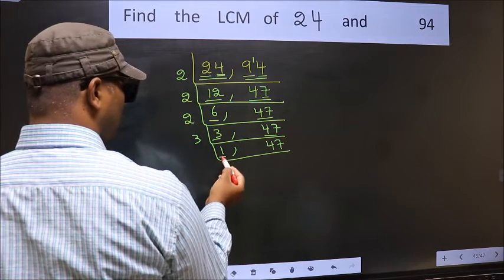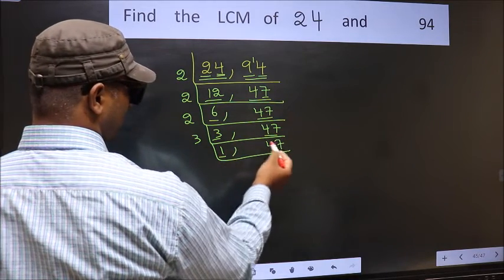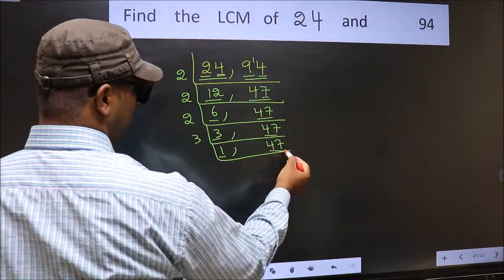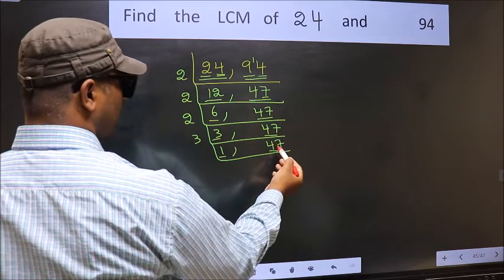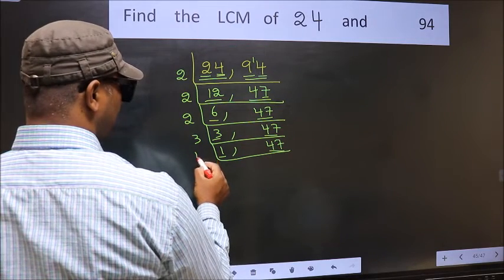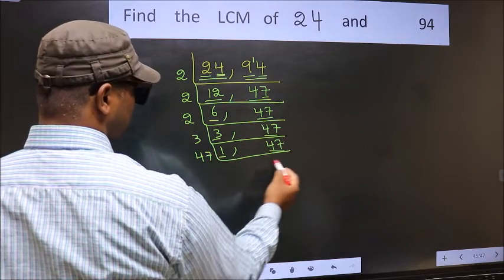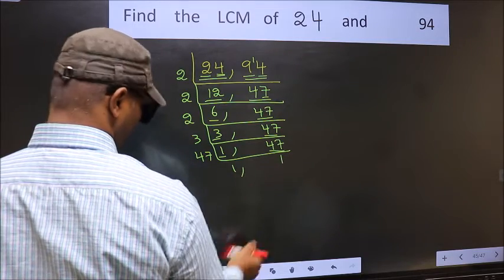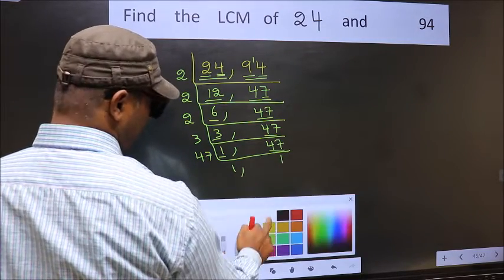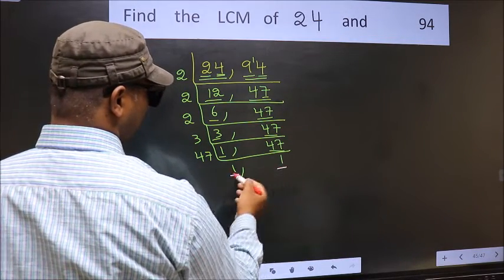Now we got 1 here, so focus on the other number 47. 47 is a prime number, so 47 once is 47. Now we have got 1 in both places.